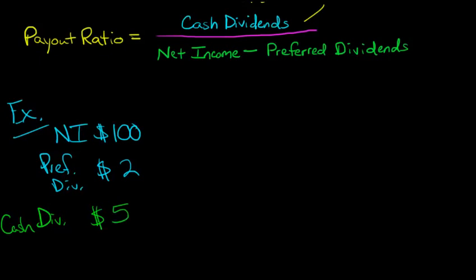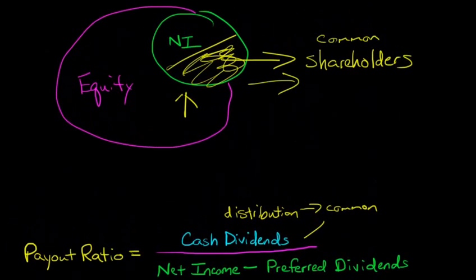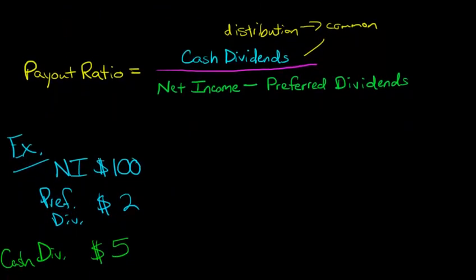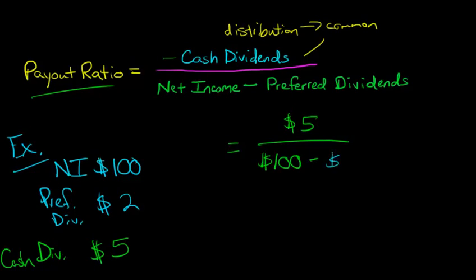So now we have to figure out what percent is this that's being divvied out to these common shareholders. So now let's just plug into our formula up here. We've got the cash dividends, which are $5, divided by the net income of $100, but adjusting for that $2 of preferred dividend. So we've got $5 divided by 98. That's going to give us .051, which we can interpret as a percentage. And so we'll say 5.1 percent.